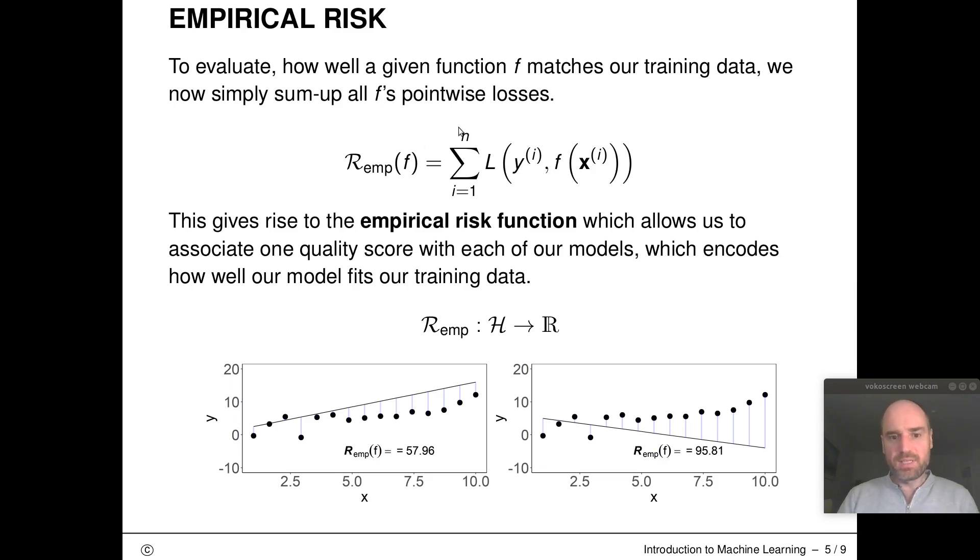This guy here we will from now on call the empirical risk function. It allows us to associate one quality score with each of our models, so it puts a number next to every element from the hypothesis space that encodes how well our model fits our training data. That's now a mapping from capital H to a score from R.